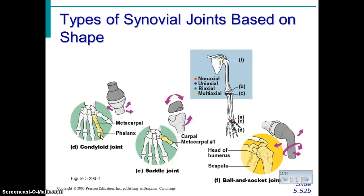Next is a saddle joint, which occurs in your thumb — you have one convex and one concave surface. And then the last type is a ball and socket joint. Ball and socket joints give a lot of range of motion but are fairly easy to dislocate, and we see these at the shoulder and at the hip.